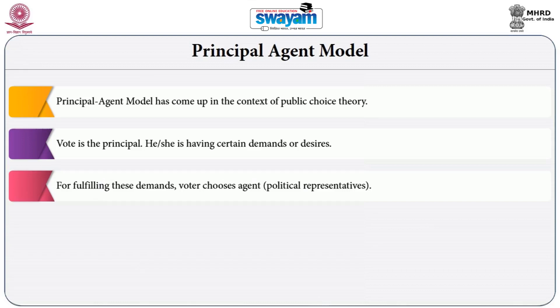Therefore, the voter nominates, appoints, or elects an agent in order to work toward fulfilling their interests and demands through policy initiatives. The voter as principal chooses the elected public representative in order to make policies for fulfilling the interests and demands of the voters.